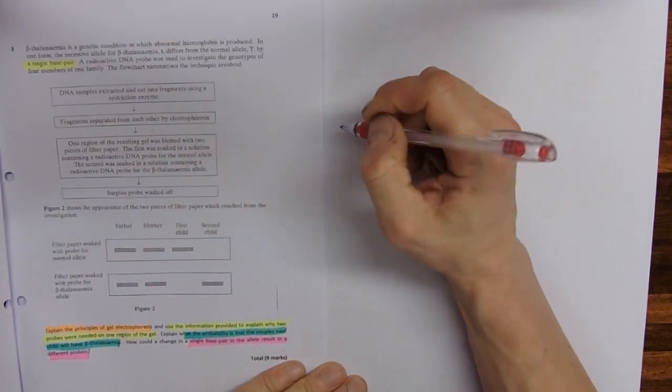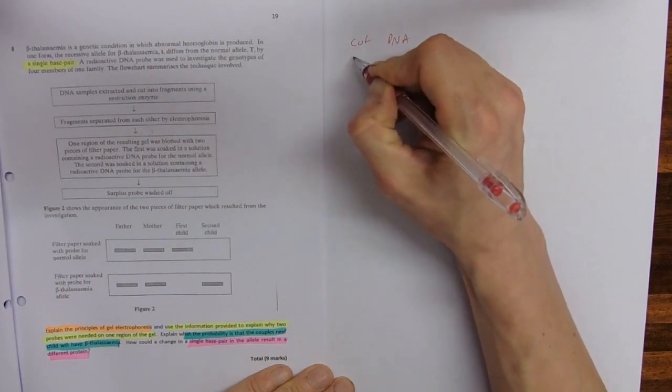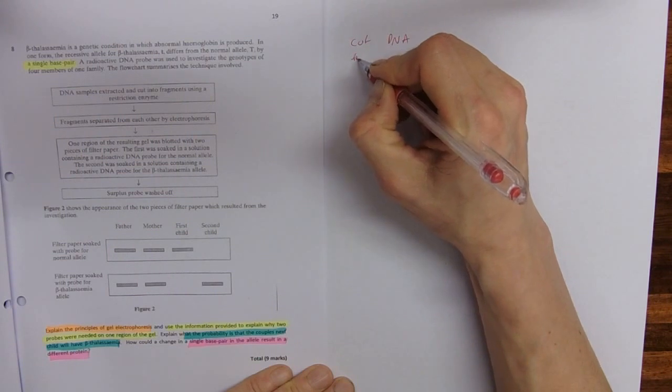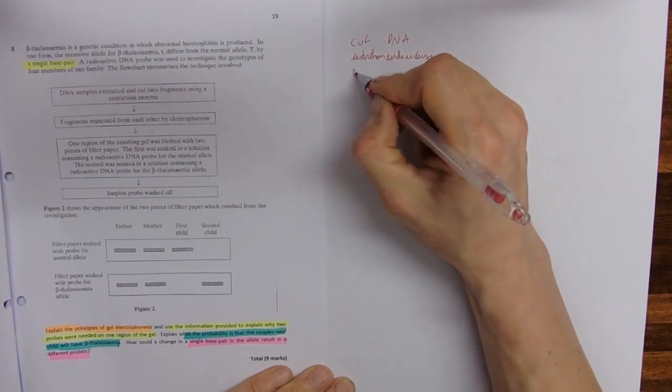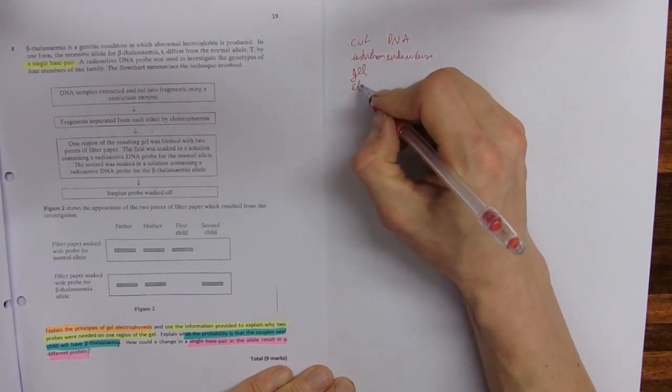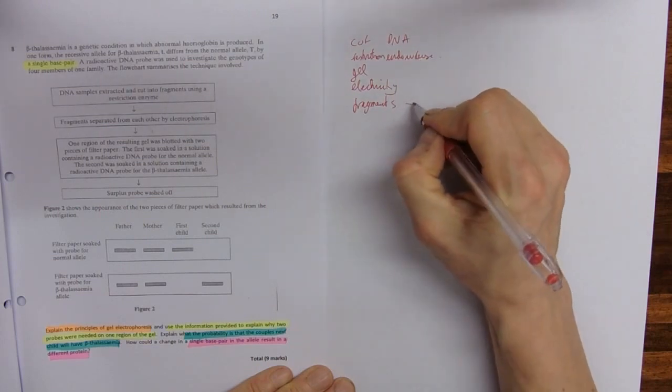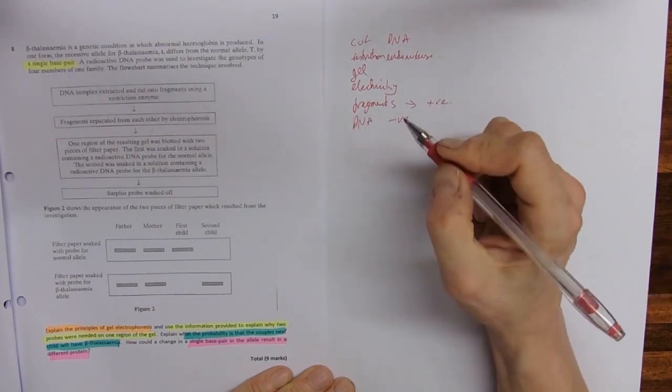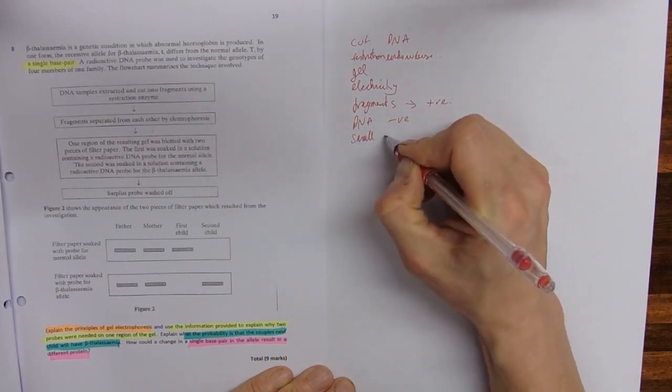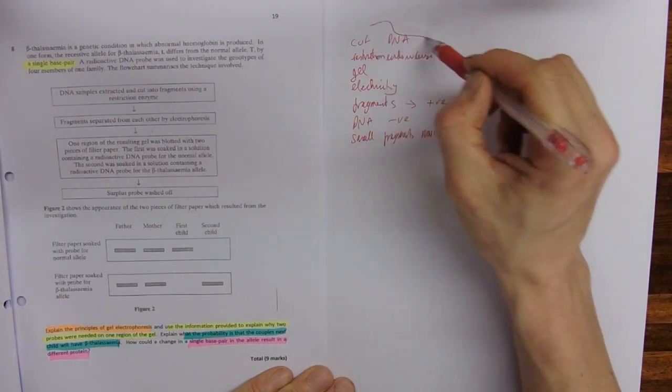Earlier on we've talked about gel electrophoresis. So the question about gel electrophoresis for cutting DNA and using enzymes, restriction endonuclease, is talking about the gel, the electricity, fragments moving towards the positive because they are negative because DNA is negative, small fragments and so on.